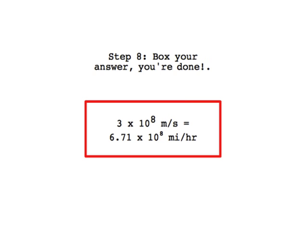Step 8: Box your answer. You're done. At last, we have our answer. The speed of light is 6.71 times 10 to the 8th miles per hour.